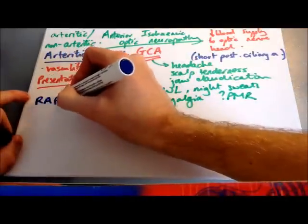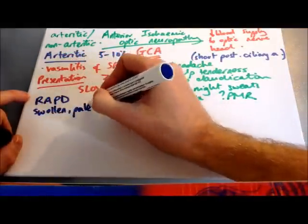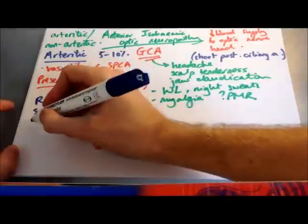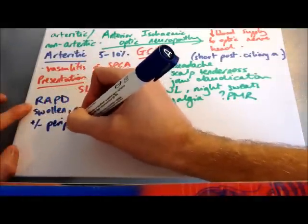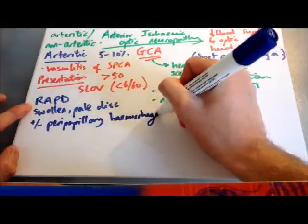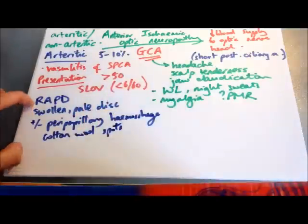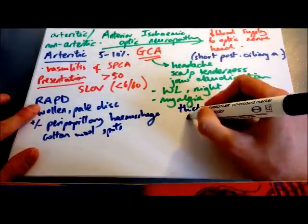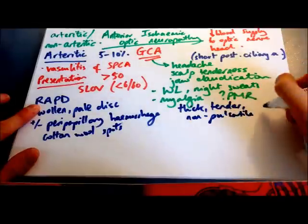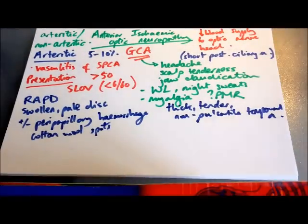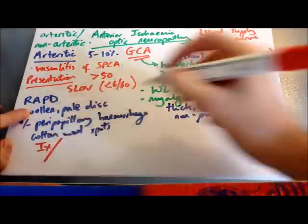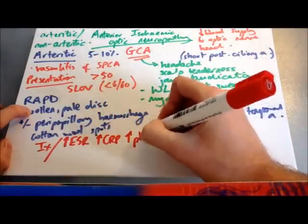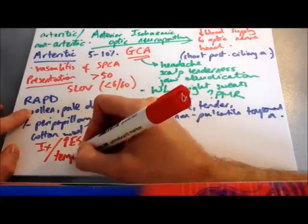On examination, signs might include a relative afferent pupillary defect, a swollen and pale optic disc — usually global pallor rather than segmental. You might also get some peripapillary haemorrhage and cotton wool spots from ischaemia. If associated with giant cell arteritis, you get thick, tender, non-pulsatile temporal arteries on palpation. If you're suspicious of this condition, investigate with urgent inflammatory markers — ESR, CRP and platelets, all of which will be raised. You'd also need to do a temporal artery biopsy to look for signs of vasculitis.